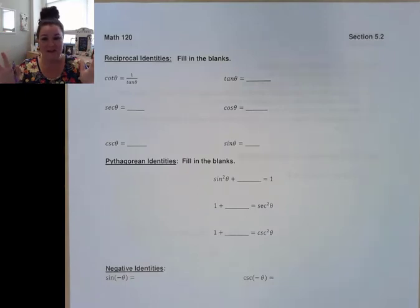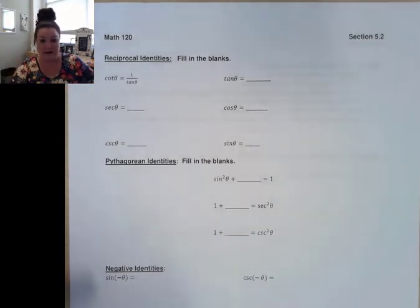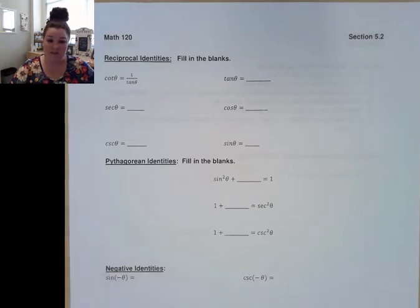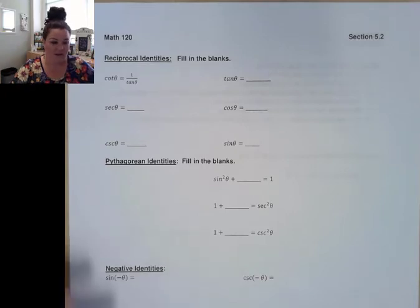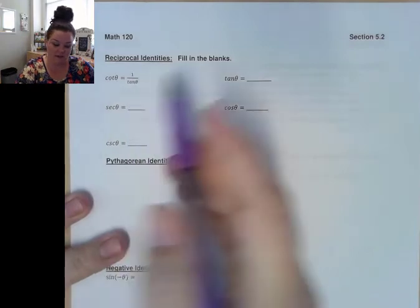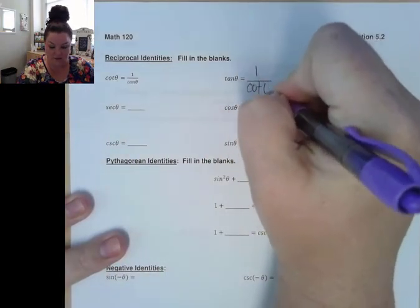Just like the last several sections we've covered, we're starting off with just remembering these identities. We want to know them like the back of our hand. So we're going to go ahead and quickly fill these in. Cotangent is the inverse of tangent, so we can also write tangent theta as 1 over cotangent theta.